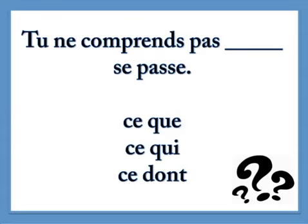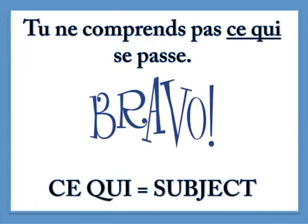Tu ne comprends pas [blank] se passe. Ask yourself: what exactly do you need to connect these two parts of the sentence? Did you notice you needed a subject there? That's why you needed ce qui. Tu ne comprends pas ce qui se passe — 'You don't understand what's happening.' Note: I'm saying all of these quite slowly, which is not how French speakers would normally say this sentence — it would sound more like 'tu ne comprends pas ce qui se passe.' But there's nothing wrong with saying it slowly, especially when you're first learning.